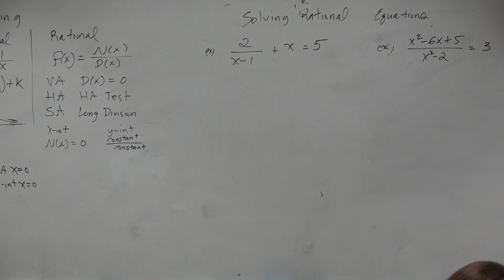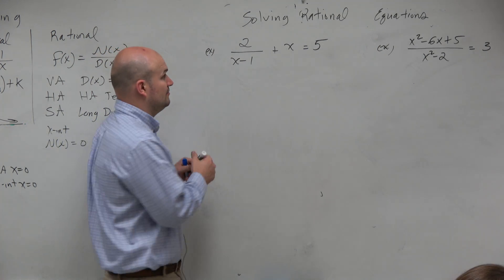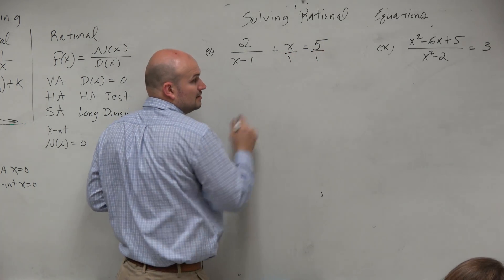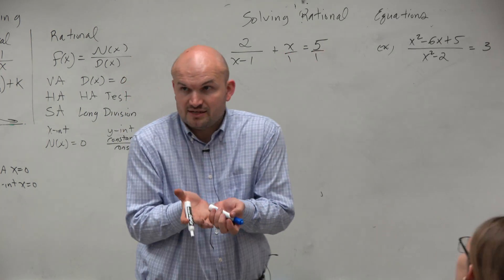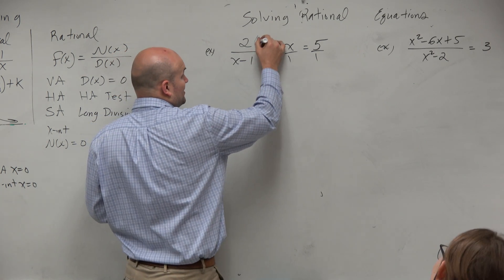So the first thing, ladies and gentlemen, is again we want to get rid - we can't have x in the denominator. We don't have any other denominators, so our LCD is going to be relatively simple, right? It's just x minus 1. So we're going to want to make sure we multiply everything times x minus 1.